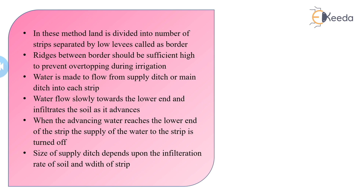The border strip should be leveled crosswise, and the land between the two borders should be properly leveled. This method is especially suited to forage crops. Its advantages include that for a relatively low investment, a system can be developed that affords the highest irrigation efficiency and lowest labor requirements. With highly mechanized farming, large areas can be irrigated within a short time. The length of the border strip depends on how quickly it can be wetted over its entire length.